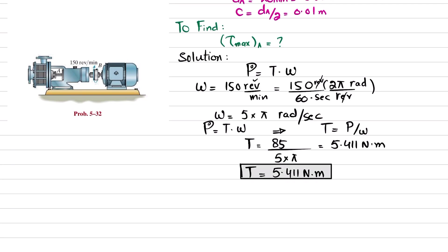Now you have torque, so we will move toward maximum shear stress. We know that maximum shear stress due to torque or torsion is equal to T times C divided by J, where T is torque, C is radius, and J is the polar moment of inertia.